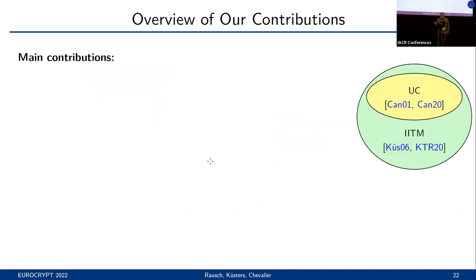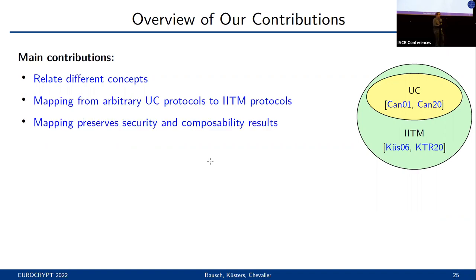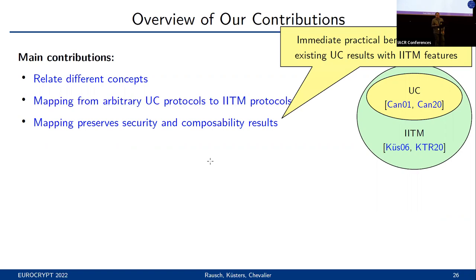As the title of our paper already reveals, our main result is that the UC model can be fully embedded into the IITM model. More specifically, we first relate both models in terms of the concepts they use, which often try to achieve a similar overarching goal but differ drastically in their technical details. We then propose a mapping taking arbitrary UC protocols to corresponding IITM ones, and show that our mapping preserves security results and composability results. As an immediate practical benefit, this means we can combine existing UC results with the aforementioned IITM features.